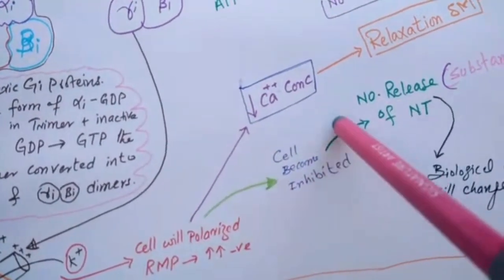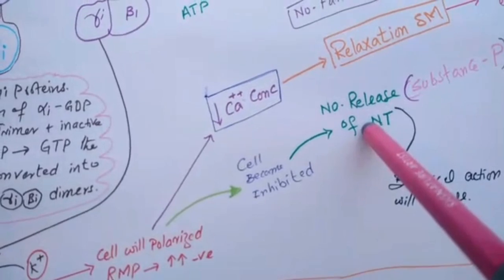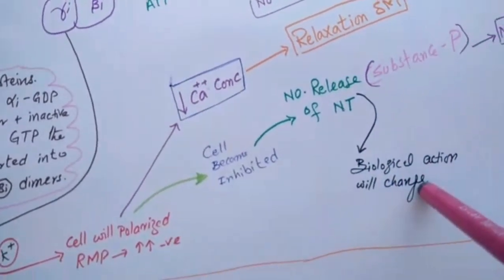And this will make the cell become like an inhibited cell. And this inhibition means no release of neurotransmitter, and biological magnitude will change.